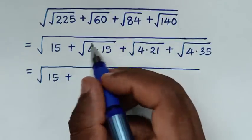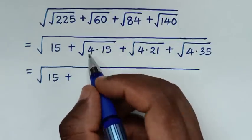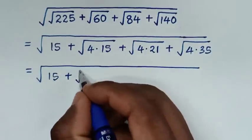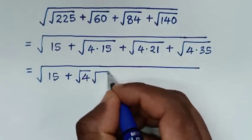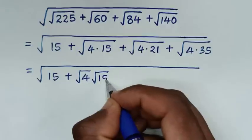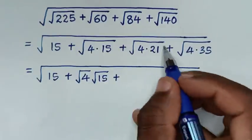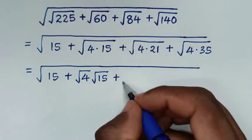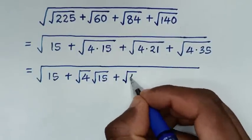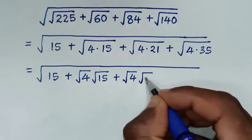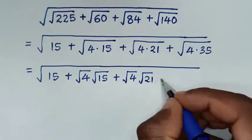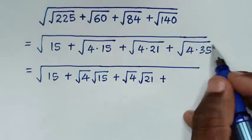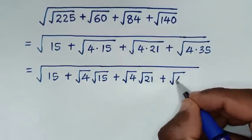We separate each term: square root of 4 times square root of 15, then plus square root of 4 times square root of 21, then plus square root of 4 times square root of 35.